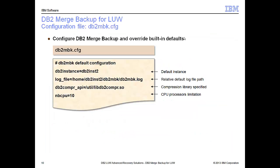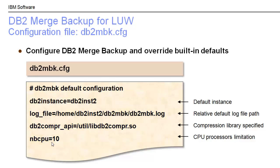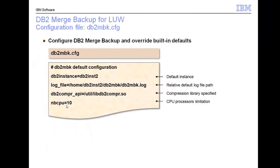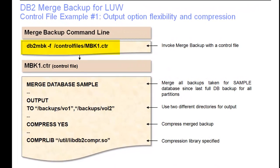The configuration file for Merge Backup is shown here. This is an example where, if we don't otherwise indicate the instance, it will default to db2inst2. You could also specify your relative log file path, compression library, or how many CPU processors would be used. This shows you can customize Merge Backup to run differently from the defaults. To run the command is simple: db2mbk minus f, the control file name — in this case mbk1control — and we're going to be merging the sample database, putting the output to the backup locations, and compressing.